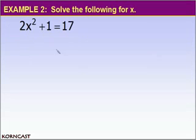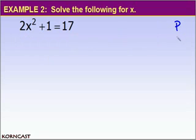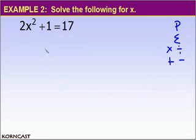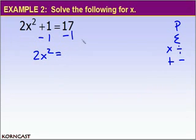In example 2, we're going to solve the following equation for x. Recall that when solving any equation for x, you must perform operations in reverse order: parentheses, exponents, multiplication, division, addition, and subtraction. So we take care of addition and subtraction first — we subtract 1 from both sides. That leaves us with 2x squared on the left and 16 on the right.